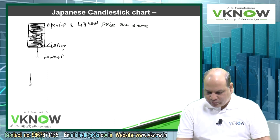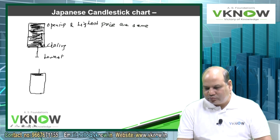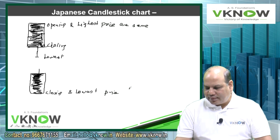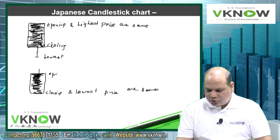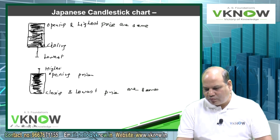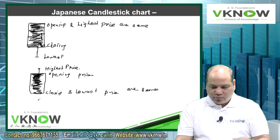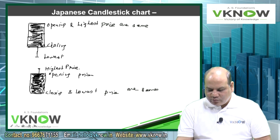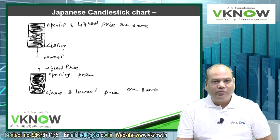One more diagram in black: closing and lowest price are same. This is opening price, this is highest price. So market opened, may have gone a little high, but then something happened and it started falling, continuing to fall until the closing price and lowest price are the same.